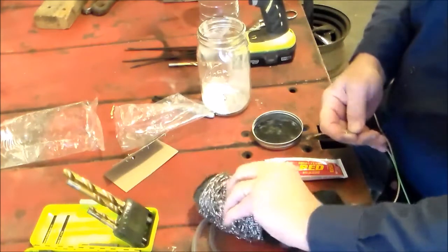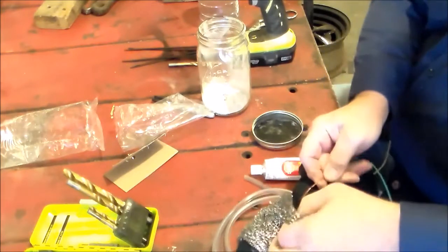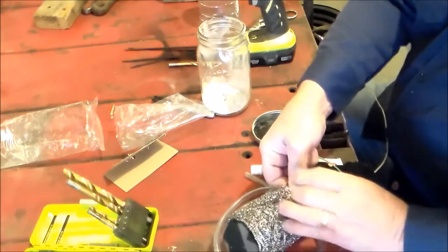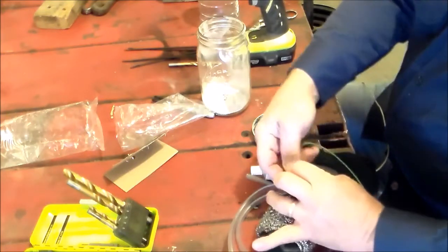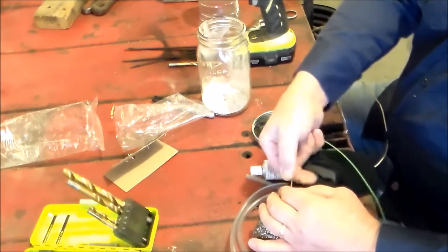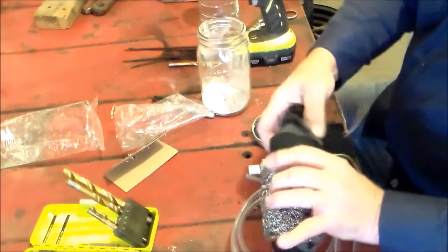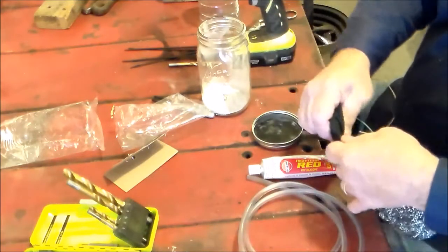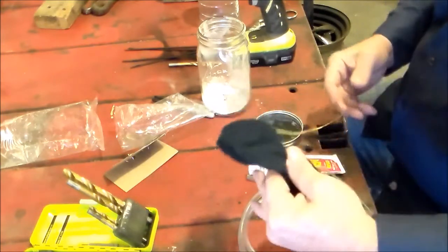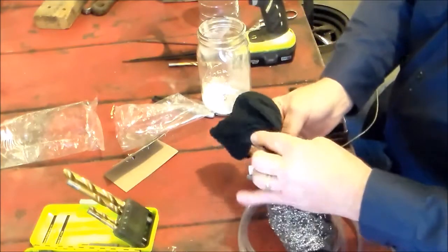And so now you take your other wire and go through there with it. So now we've got a negative and a positive wire. I'm going to use a zip tie.